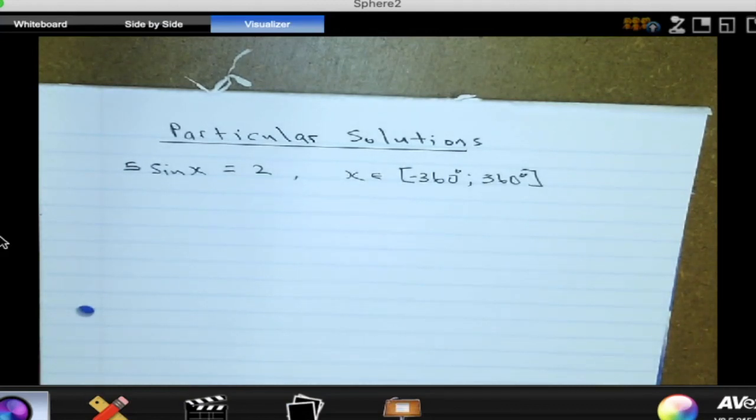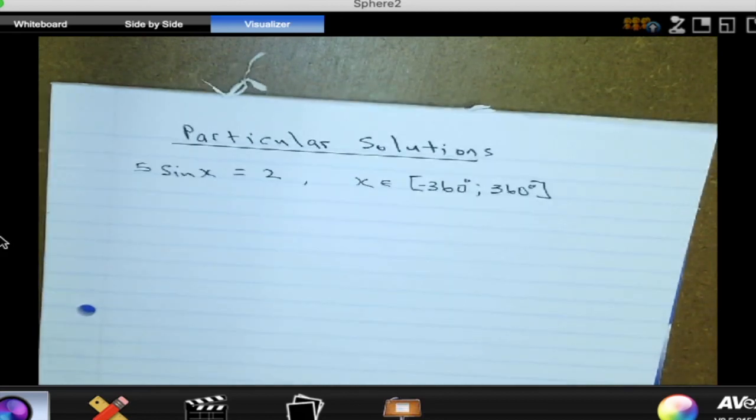So we're looking for X and we are looking for particular values. The values of X we want should be in the interval from negative 360 degrees up to 360 degrees.